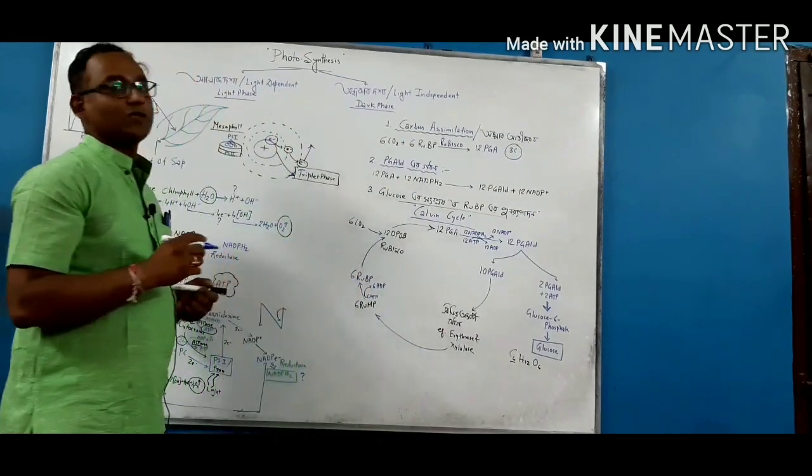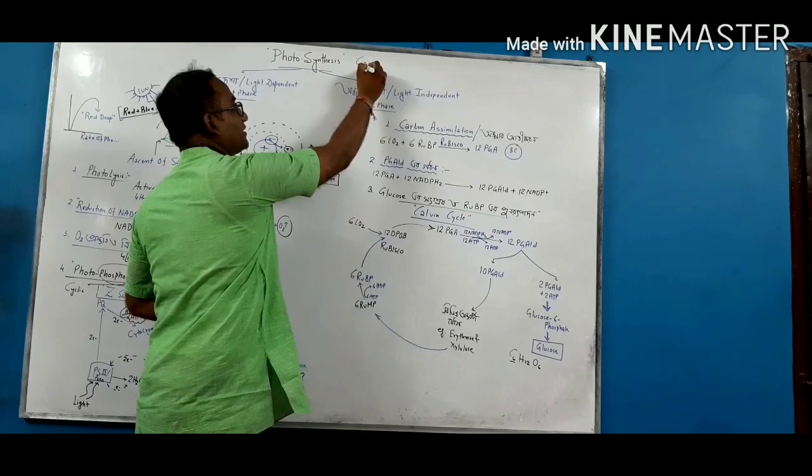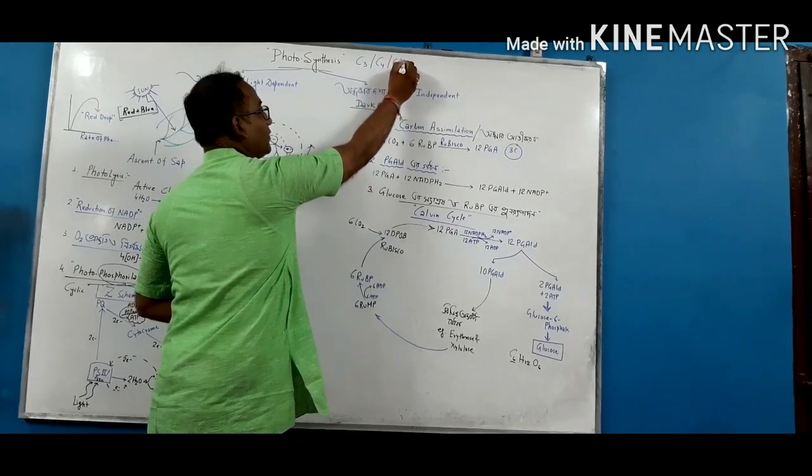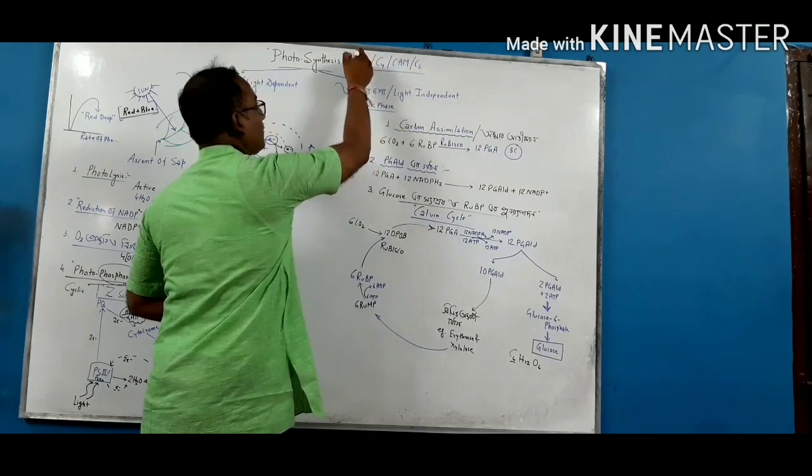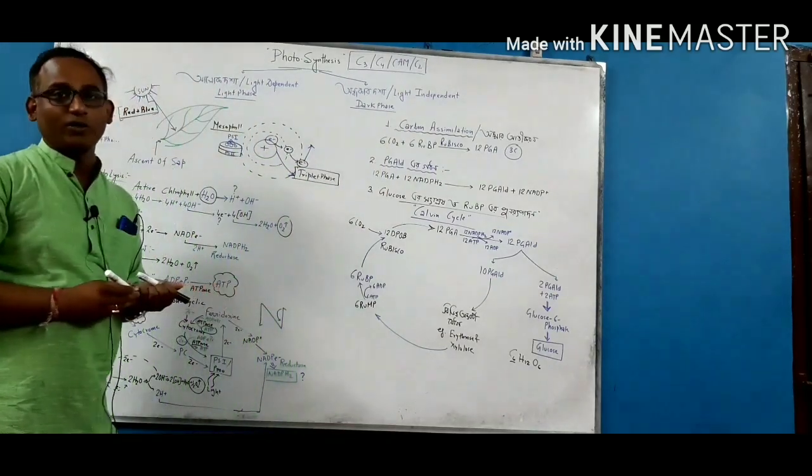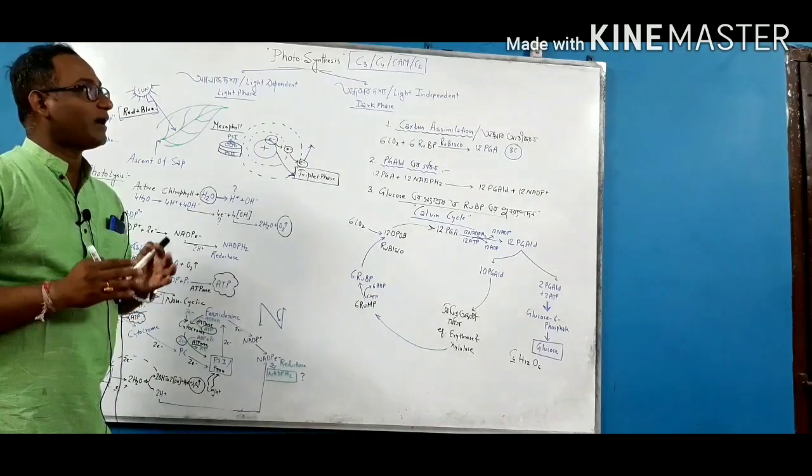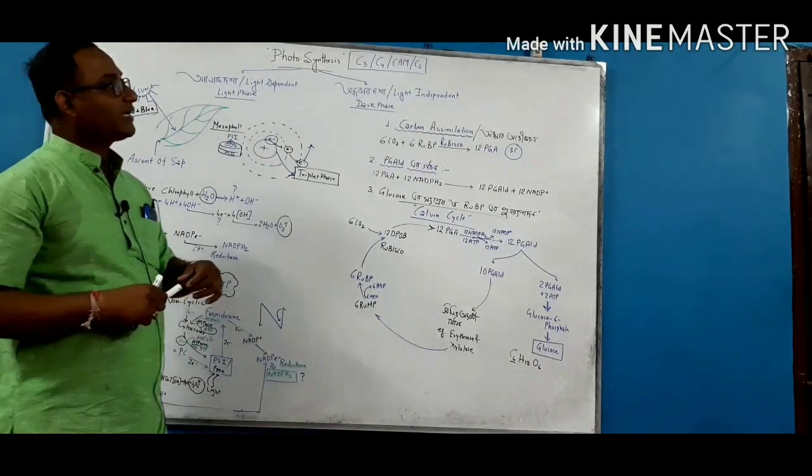We know that we can see that in the first time we can see that C3, C4, CAM plants. So we can see that these kinds of gases are used in the first style. These are the things that we can see that in C3, the first style of gases can be used.